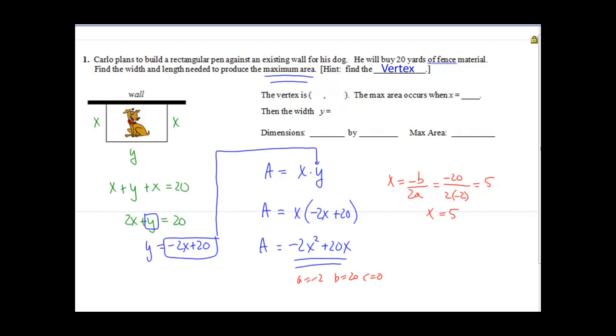So if X equals 5 and we input this 5 into our equation, you're going to get the area is equal to negative 2 times 5 squared plus 20 times 5. 5 squared is 25 times negative 2 is negative 50 plus 100. 100 minus 50 is 50 yards squared.